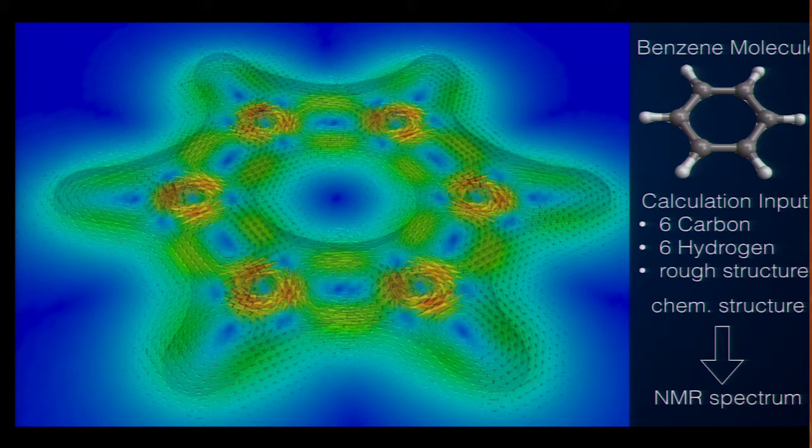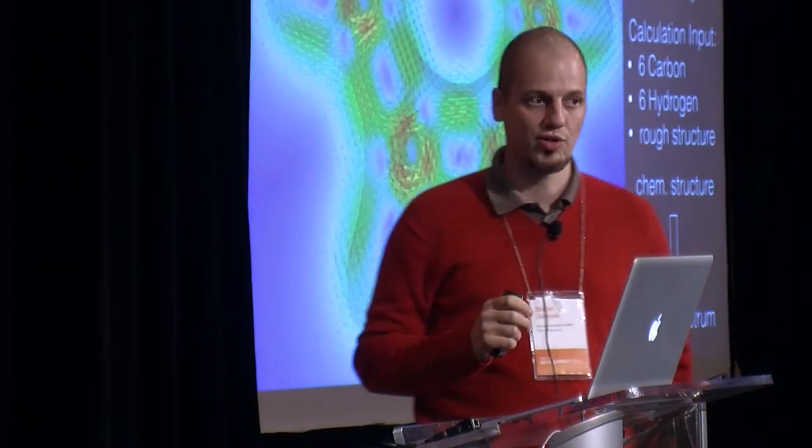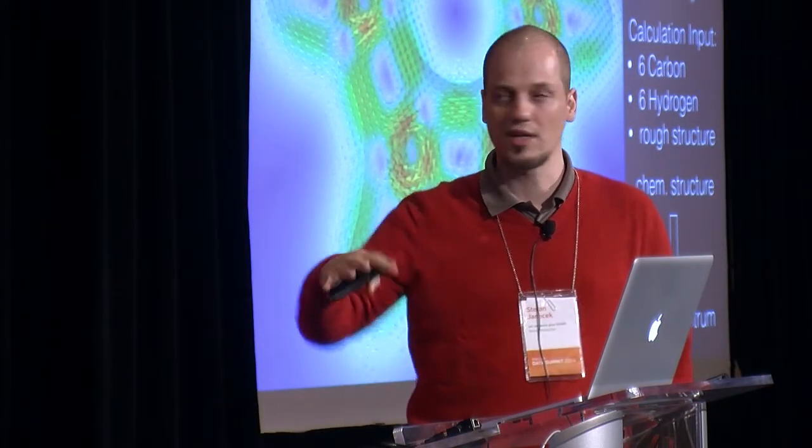So, different structure means different currents. And you can indirectly measure them because those currents, in turn, induce a secondary magnetic field. And at the positions of some of the atoms, you have isotopes that have a spin. So, this is like a small little compass needle. And you can tickle this compass needle by a radio pulse and measure its resonance frequency. And this frequency gets detuned depending on the magnetic field there, which again depends on the currents, which again depends on the chemical structure of the molecule.